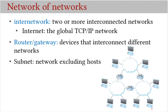The interconnection of two or more networks is called an inter-network, or internet for short. Note that we use internet with a small 'i' to refer to this generic inter-network, and we use Internet with a capital 'I' to refer to the global TCP/IP network. A router is a device that interconnects different networks and uses a store-and-forward mechanism to forward packets. Routers are also called gateways.